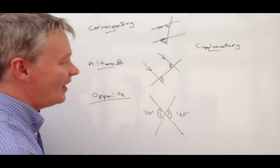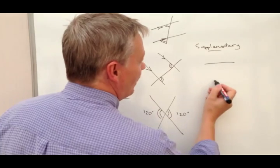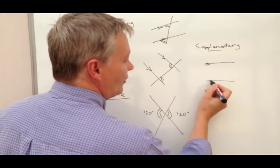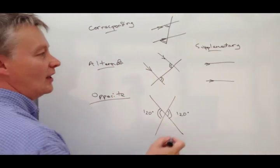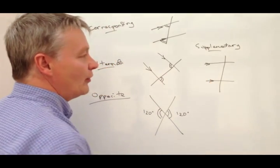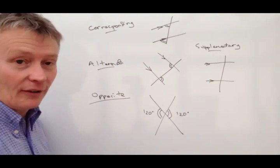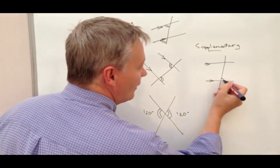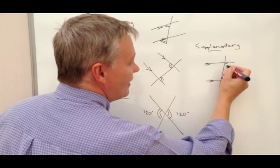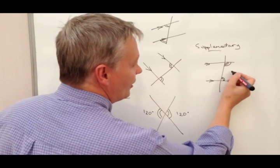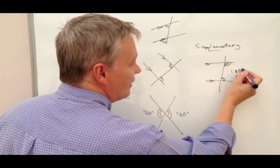And all supplementary is, is that if you've got again your two parallel lines, and you've got a straight line that passes through those parallel lines, then this angle and this angle add up to 180 degrees.